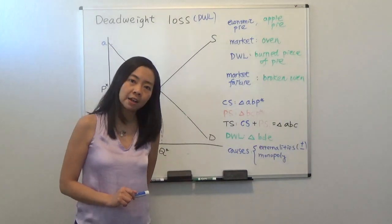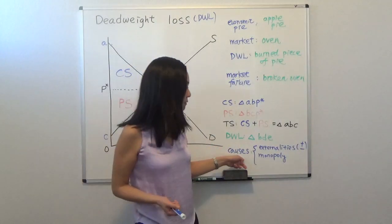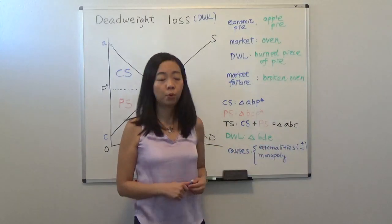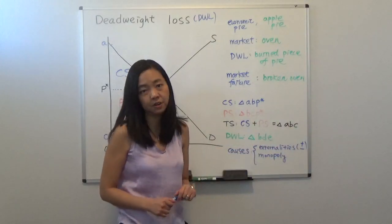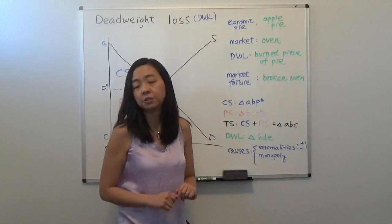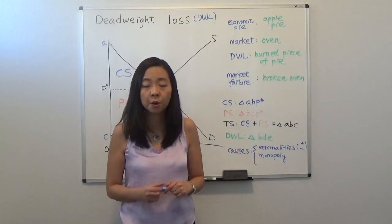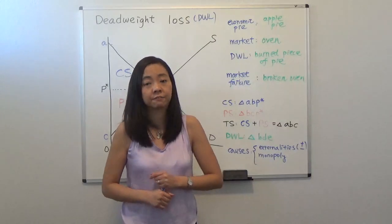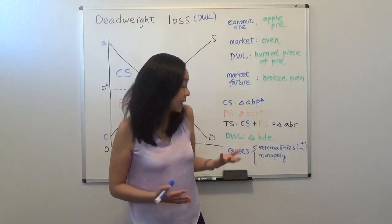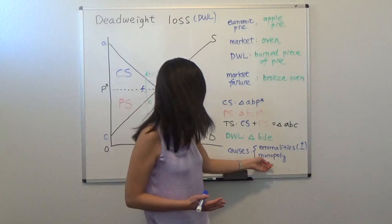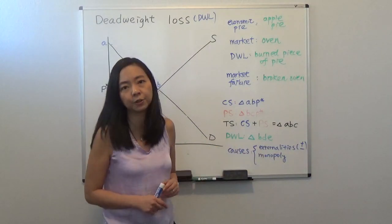Now suppose you have market failure, typically the cost of market failure can be externalities, whether positive or negative, or because you have monopoly. So you don't necessarily need to have a monopoly. As long as you have a firm that is very large and has very large market power, then they can act like a monopoly and they can cause market failure.